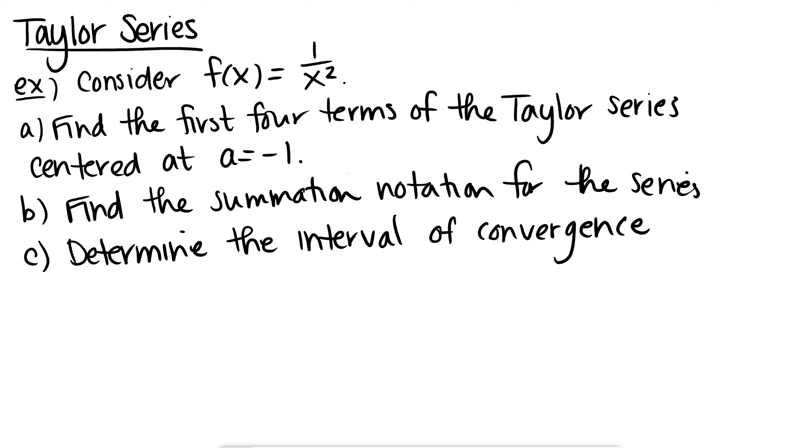The function I have here is f of x equals 1 over x squared, and let's just start with a, find the first four terms of the Taylor series centered at a equals negative 1. So what I like to do is I like to go back to the definition of the Taylor series, which is f of a plus f prime of a times x minus a plus f double prime of a over 2 factorial times x minus a squared plus the third derivative evaluated at a over 3 factorial times x minus a cubed. And I think that's our first four terms.